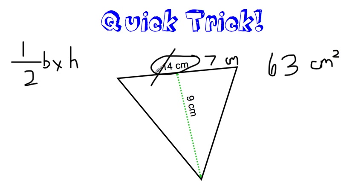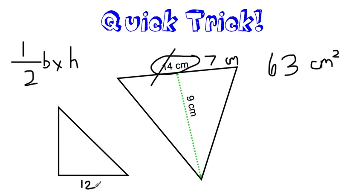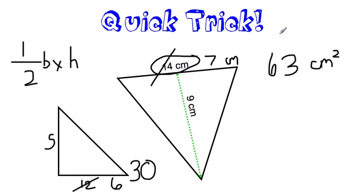Let's try one more. If the base is 12 and the height is 5 — it would be hard to chop 5 in half because we'd have to work with decimals like 2.5. But since 12 is even, we just chop that in half and make it a 6. Now we've done the half part of the formula, and we just do base times height: 6 times 5 gives us an answer of 30. Make sure you write this trick in your notebook so you know you can use it when finding the area of triangles.